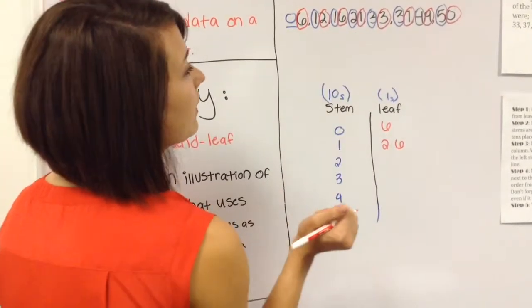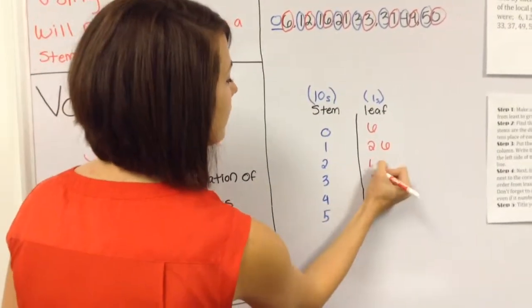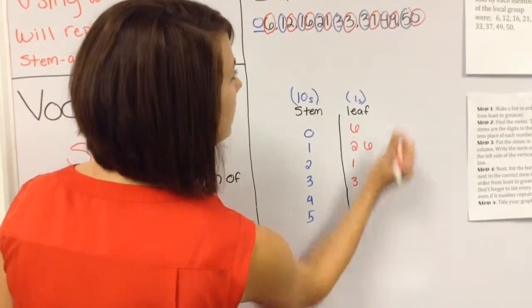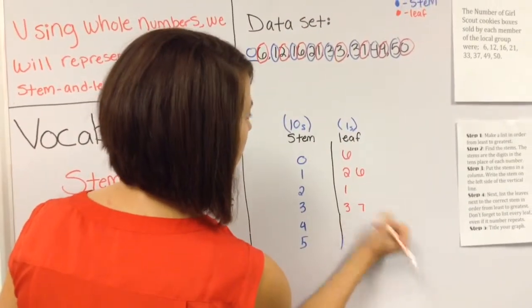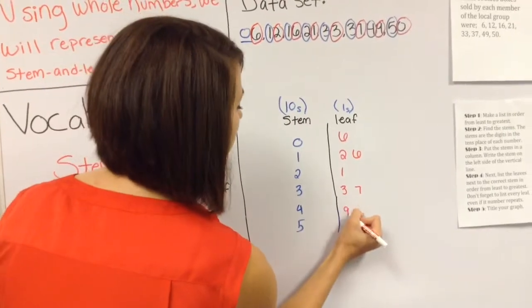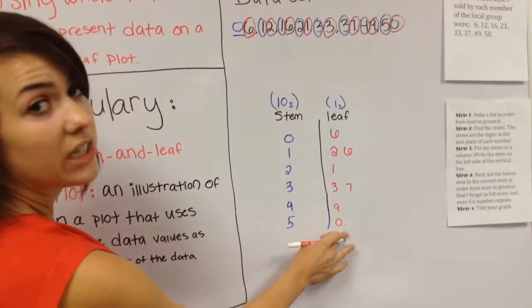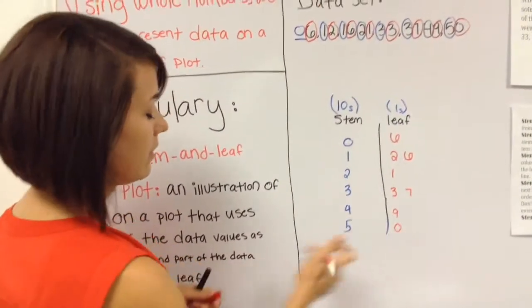Now let's move on. There we have the number 21. So here's the number 21. And 33. One at 37. And then 49. And 50. Even though there is a zero listed in our ones place, we still have to list it on here to show that there is that value there.